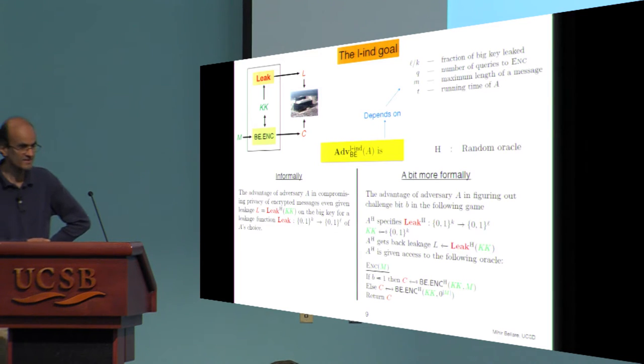So I'll start with a little more precise rendition of the security goal, and this is called leakage indistinguishability. That symbol there is not a one, it's an L standing for leakage. We're in the same setting over here, and we associate to any adversary a number. This is non-asymptotic, so it's just a number, its advantage in breaking this leakage indistinguishability. And informally what it means is that it's the probability or advantage of the adversary in compromising security of encrypted messages when it's given some function, some information about the key.